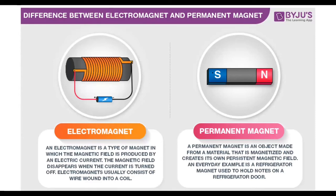You have a permanent magnet such as steel, and you have an electromagnet that has been magnetized using electricity. As soon as you switch off the electric supply, it no longer remains a magnet — the magnetic field is produced using an electric current and consists of a wire wound into a coil called a solenoid. Whereas a permanent magnet is made of a material that is magnetized and creates its own persistent magnetic field that will not disappear once magnetized — for example, the refrigerator magnets you use to stick paper on your fridge.